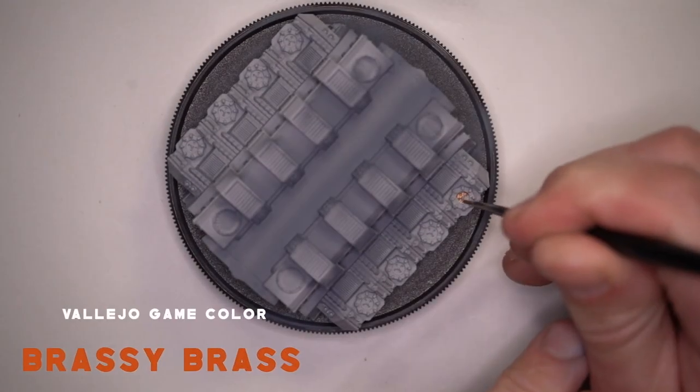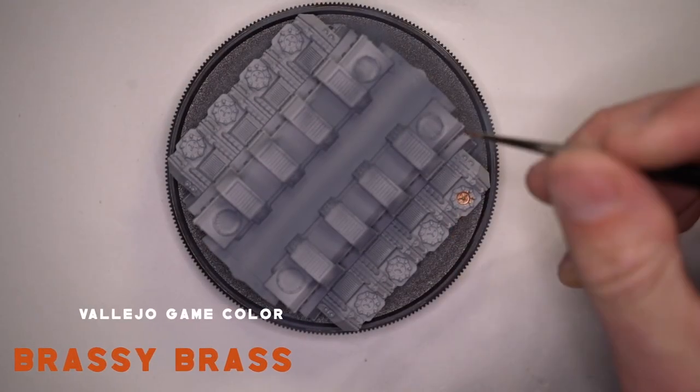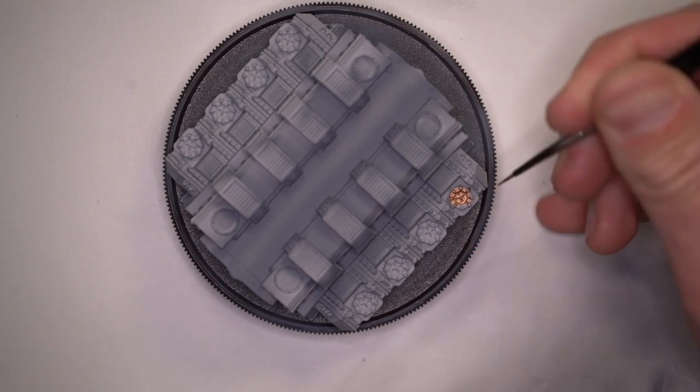The eight caps on the edges of each side of the Manufactorum were then painted in a brassy copper colour.